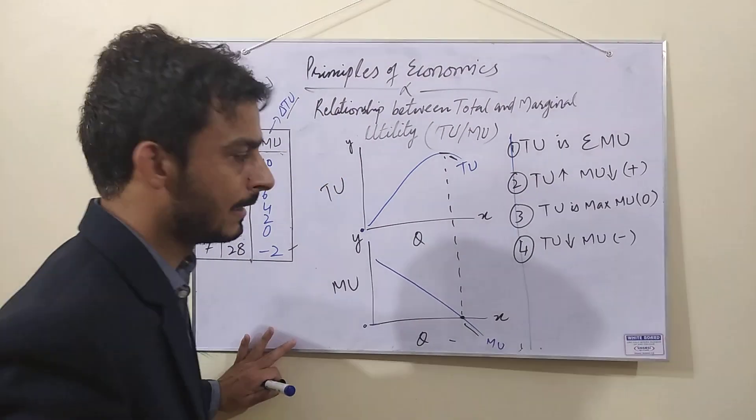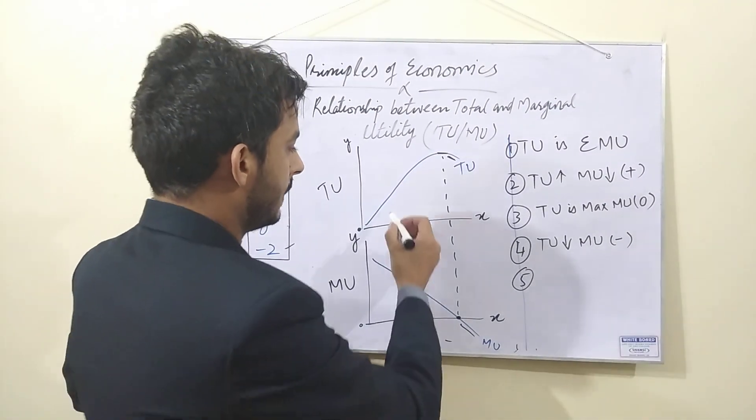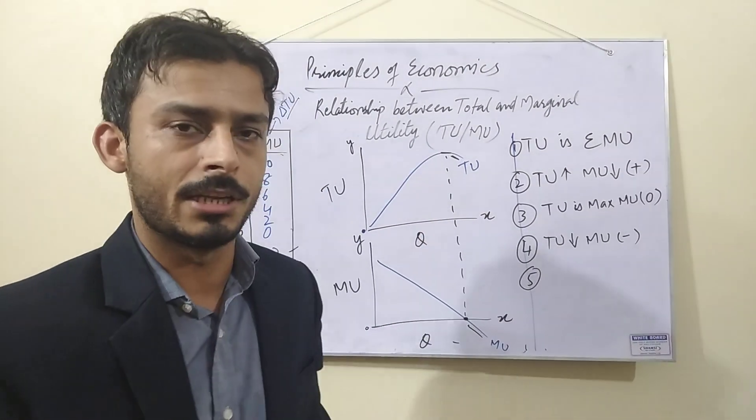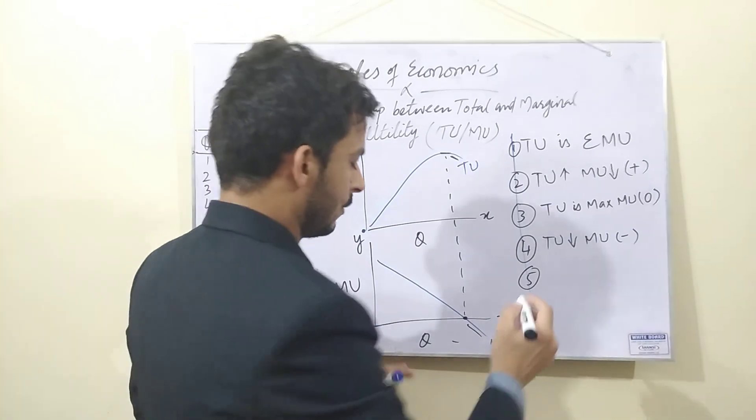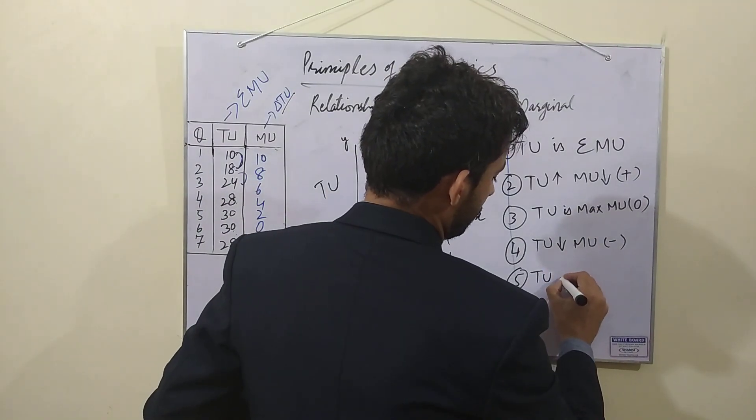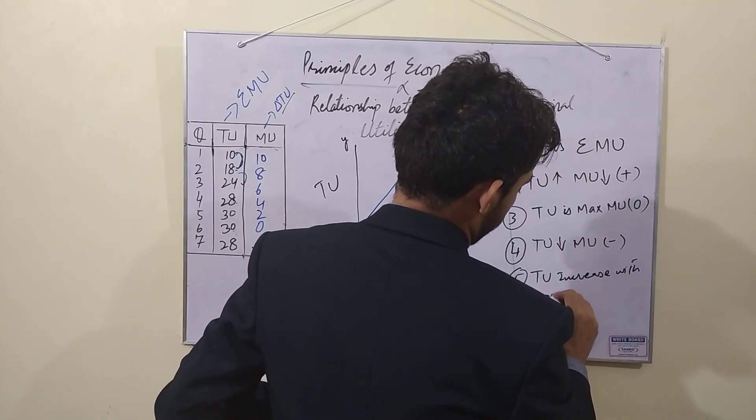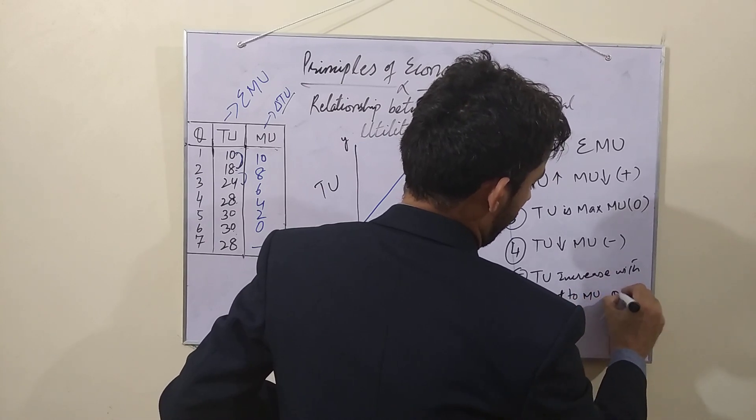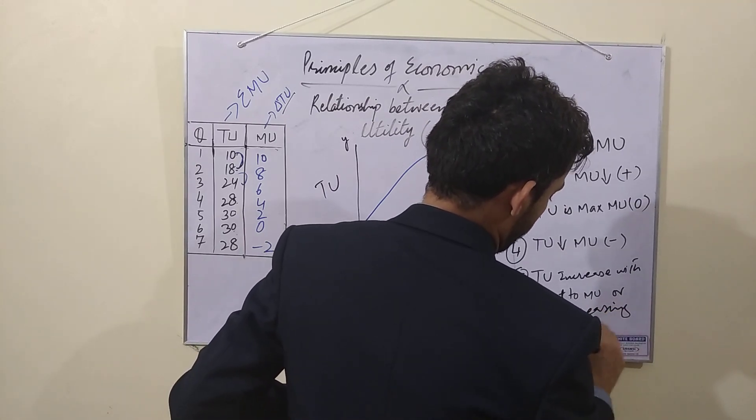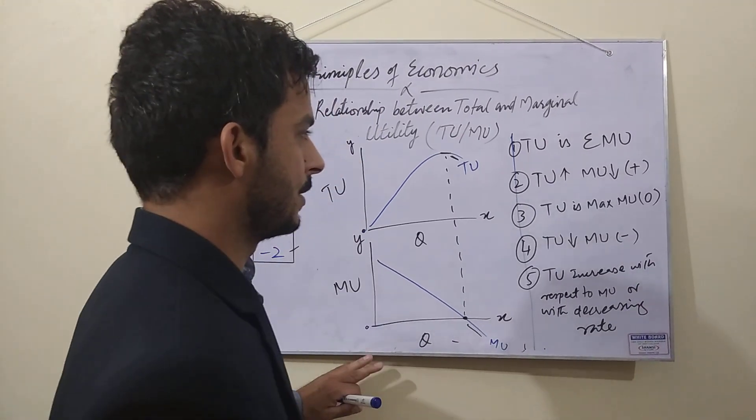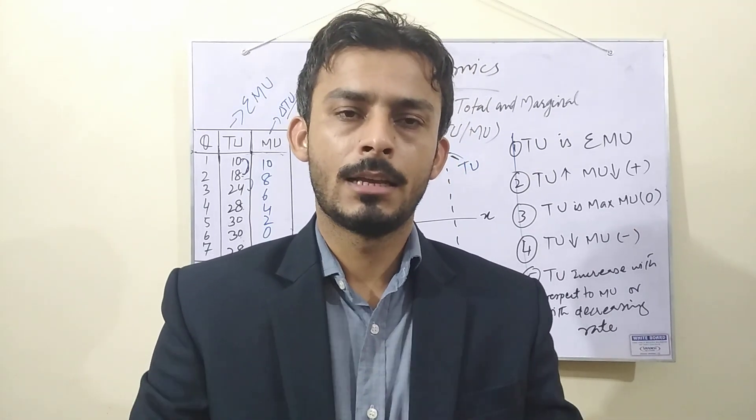These are the four relationships and the fifth one would be total utility always increases with respect to marginal utility. Or total utility increases in other words with decreasing rate. So total utility increases with respect to marginal utility and with decreasing rate.